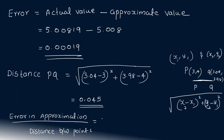The ratio of error to distance is: 0.00019 / 0.045 ≈ 0.000004226, showing the error is very small relative to the distance PQ.